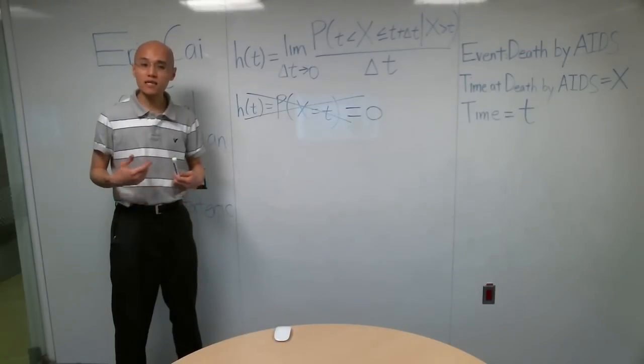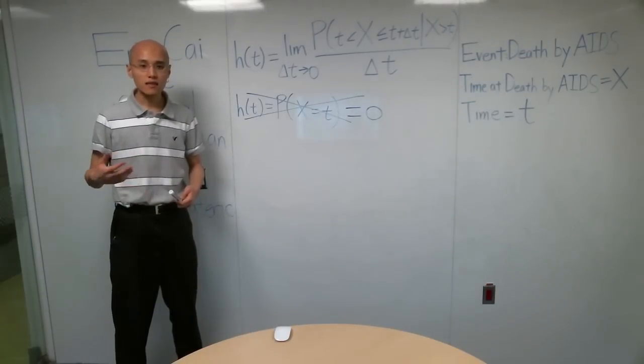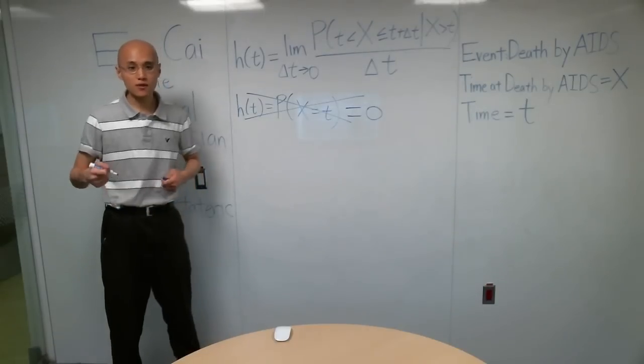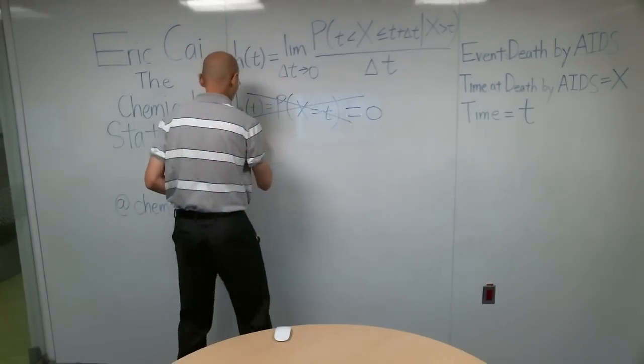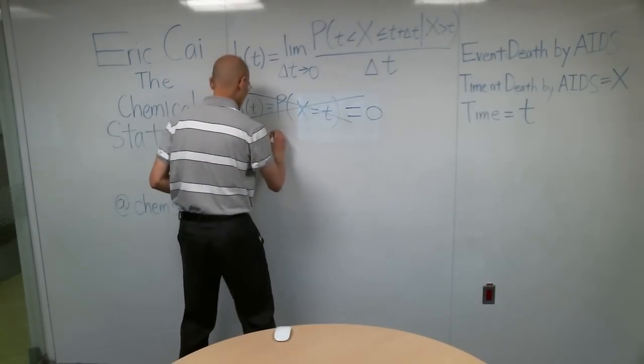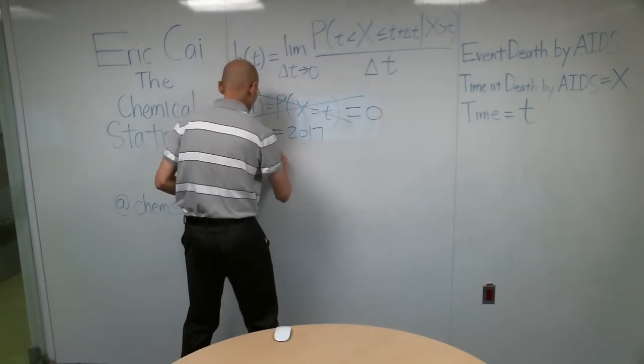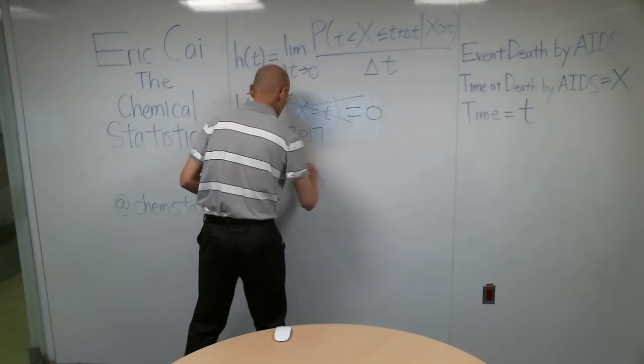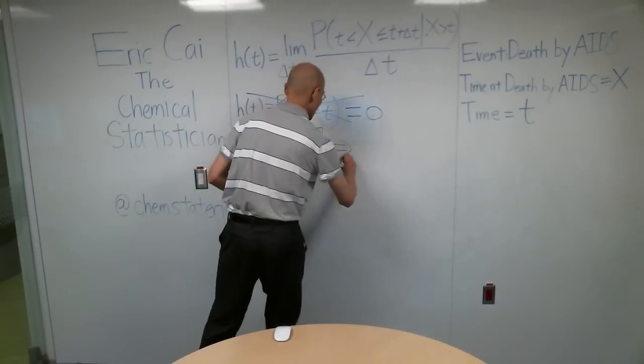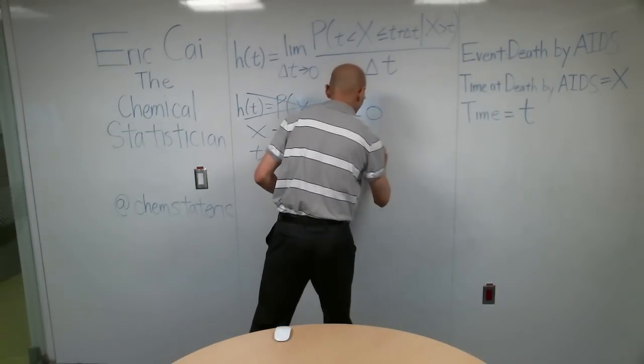Now, you may be wondering why we're conditioning on the event X is bigger than T. Well, let's consider an example. If our patient of interest died in the year 2017, but the study started in the year 2019,